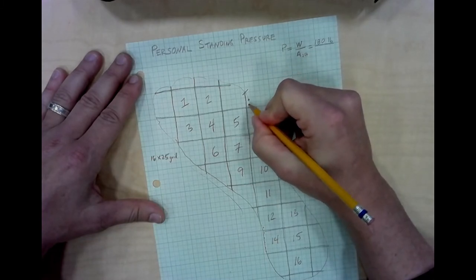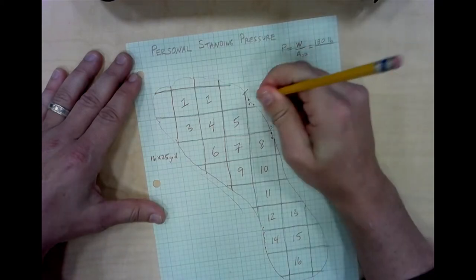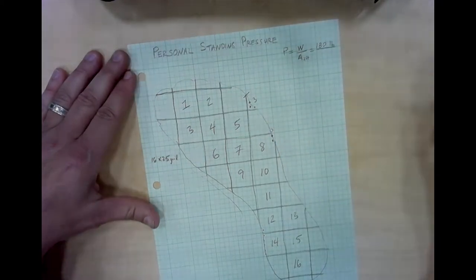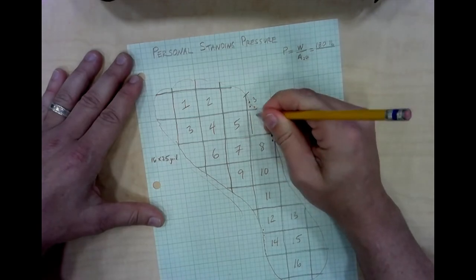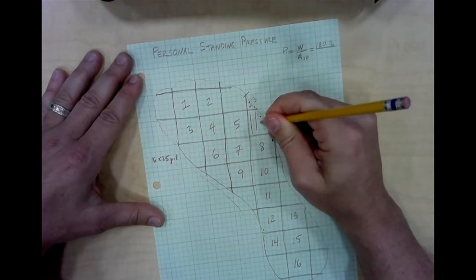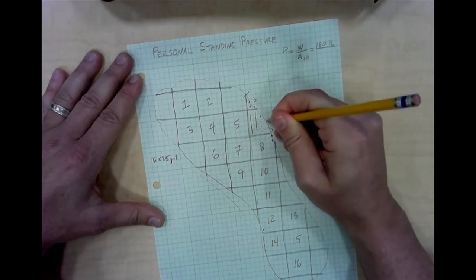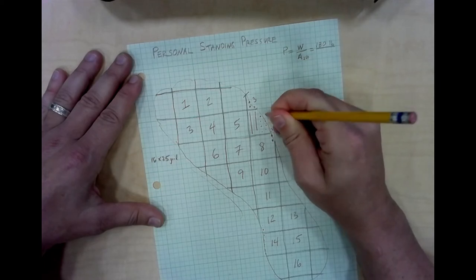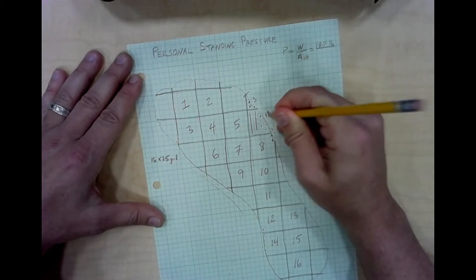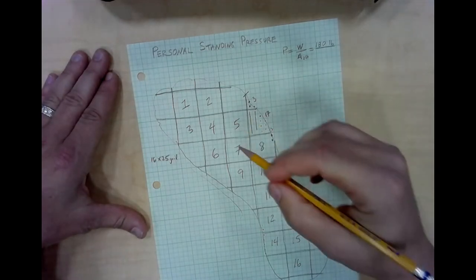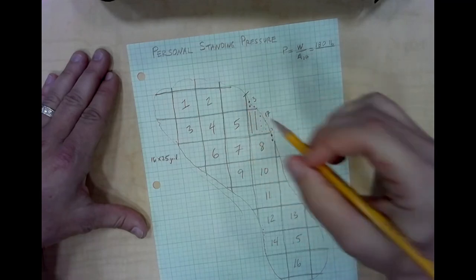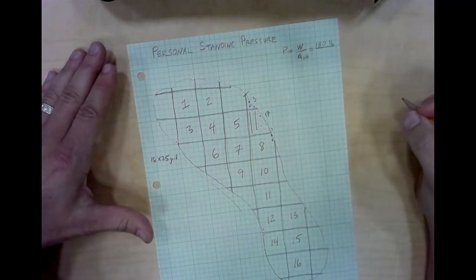For example here I'm going to count 1, 2, 3. I'll identify that there are 3 smaller grid boxes there. I will look and notice that there are 5, 10, 11, 12, 13, 14, 15, 16, 17 boxes smaller grids associated with that larger box and I'll continue to do so all the way around the perimeter of the foot until I've counted all of these parts.